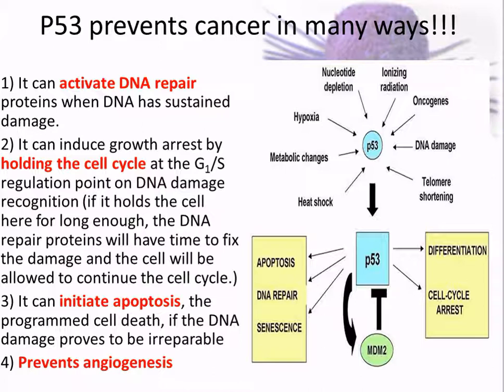The P53 gene has several key functions. First, it activates DNA repair proteins — when you hit a checkpoint with flaws, P53 hits the brakes but also turns on repair mechanisms to try to fix the DNA, applying the brakes while patching and repairing things.